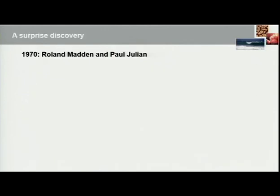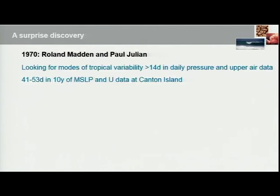The MJO, the Madden-Julian Oscillation, is a large atmospheric disturbance in the tropics — in fact the largest mode of intra-seasonal or sub-seasonal variability in the tropics. By sub-seasonal, we're talking about greater than two weeks in terms of its periodicity and shorter than a season. In 1970, Roland Madden and Paul Julian, who worked at NCAR in the US, were looking for modes of tropical variability on timescales greater than two weeks, using daily pressure and upper-air data from Canton Island in the tropical Pacific. What they found was a pulse on about 41 to 53 day timescales, which they narrowed down using spectral analyses to a peak of variability at about 40 to 50 days.